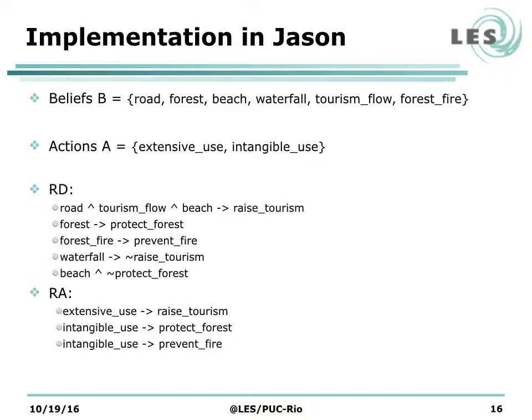For instance, the first desire rule says that if the agent believes the area has a road, a tourism flow, and a beach, then the agent will have the desire to raise tourism. The second desire rule says that if the agent believes the environment has a forest, then the agent will have a desire to protect that forest. Concerning the decision rules, the first rule says that if the extensive use action is available, then the agent will have the desire to raise tourism. In this stage of the work, there is no mechanism for the generation of rules — they were implemented manually to simulate the attack relations in the agent's belief base.